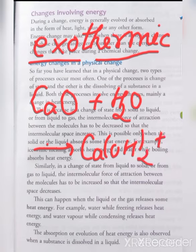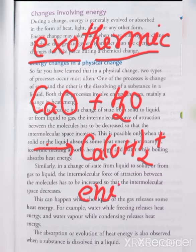CaO is known as quicklime and Ca(OH)₂ is known as slaked lime. Quicklime has a maximum amount of internal energy, and when it dissolves in water its energy is released. It produces slaked lime and releases a large amount of energy — this is known as an exothermic process.